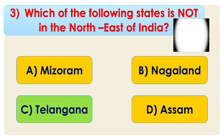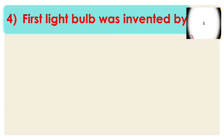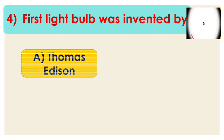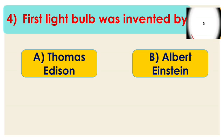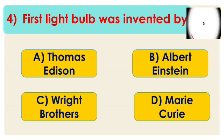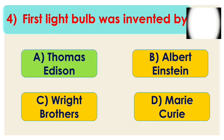Question number 4: who invented the first light bulb? Options are A. Thomas Edison, B. Albert Einstein, C. Wright Brothers, and D. Mercury. Time is over — the right answer is Thomas Edison. Thomas Edison was the first who invented the light bulb.